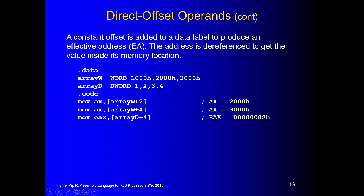For arrayD plus 4, arrayD holds the first element's address. Since dword elements are 4 bytes apart, plus 4 gets the second element's address. So arrayD plus 4 gives the second element, and that's why EAX equals 2H in that statement.